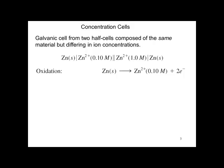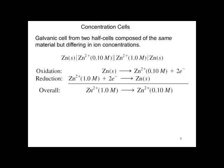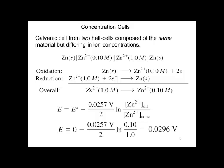The oxidation is zinc to zinc 2+ plus 2 electrons. The reduction is zinc 2+ plus 2 electrons to zinc. E equals E zero minus 0.0257 volts over 2 times the log of zinc 2+ dilute over zinc 2+ concentrated. Of course, the E zero is going to be zero. Substituting in the numbers, you see that E is a positive 0.0296, so this is the spontaneous reaction.